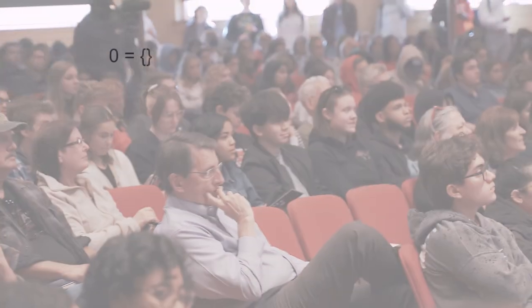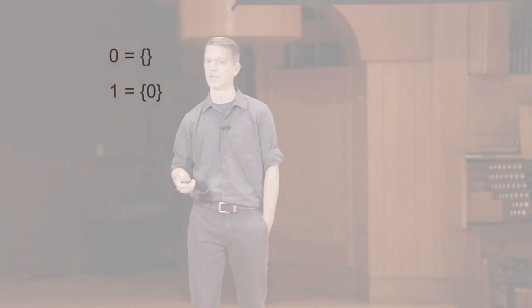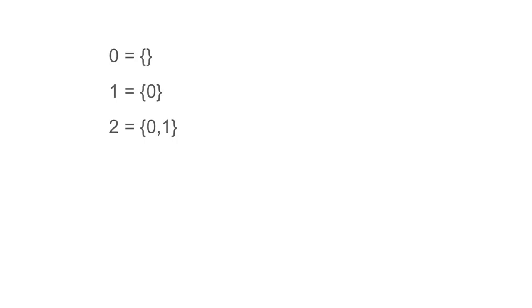Let's start with our first natural number: zero. We define zero as the empty set. After all, if our goal is to define the natural numbers in terms of sets, what's more natural than to say that zero is the set that contains zero things? With this, we've defined our first natural number, and we can use that to define the next natural number, namely one. It's defined as the set that contains one thing, namely the number zero. So we've defined two natural numbers now. Two can be defined as the set that contains two things: zero and one. And this pattern continues.